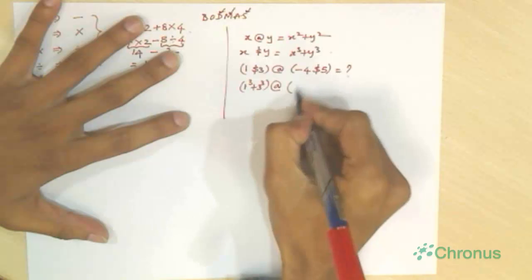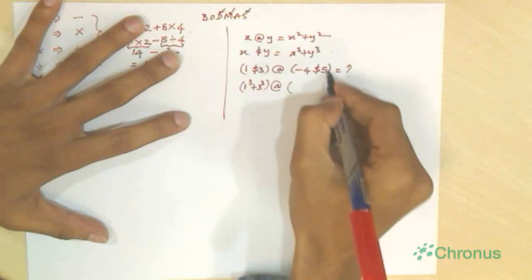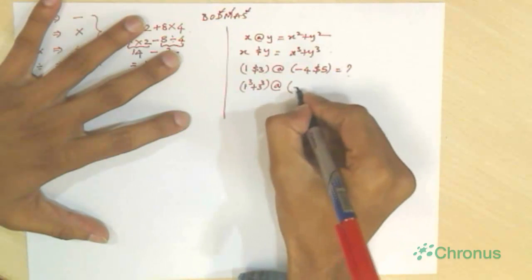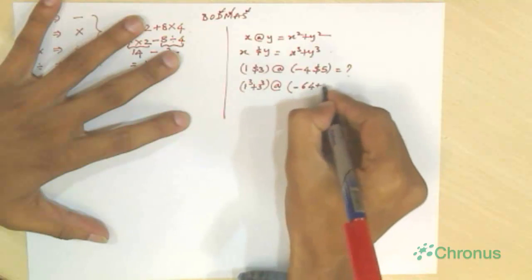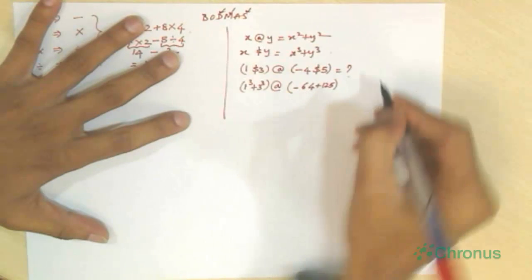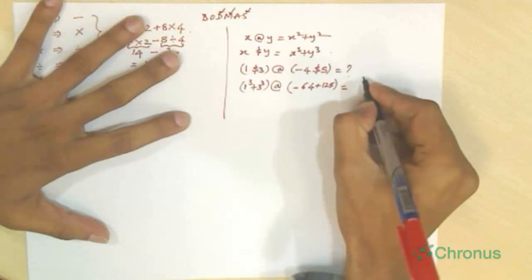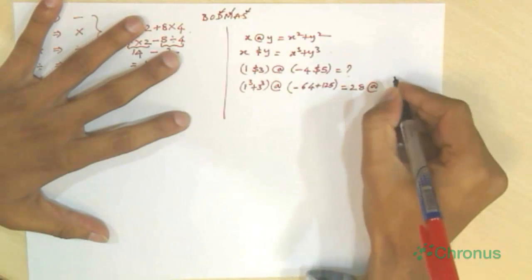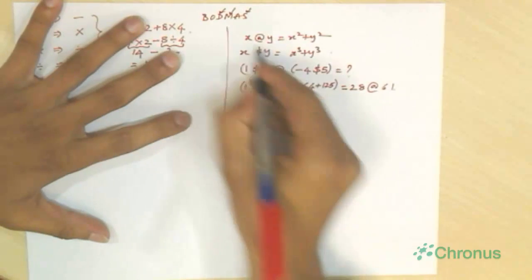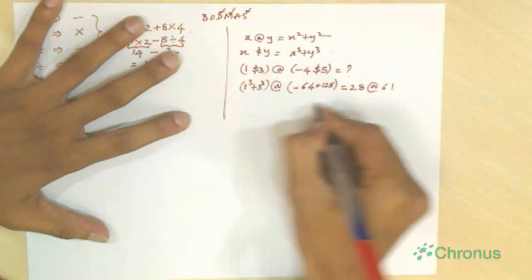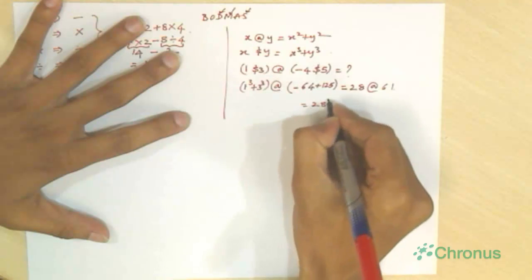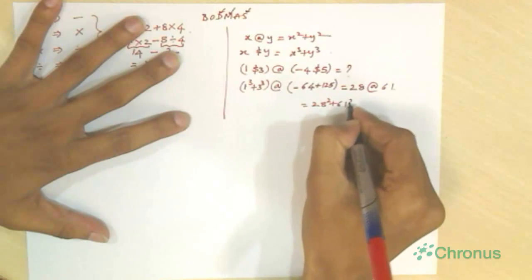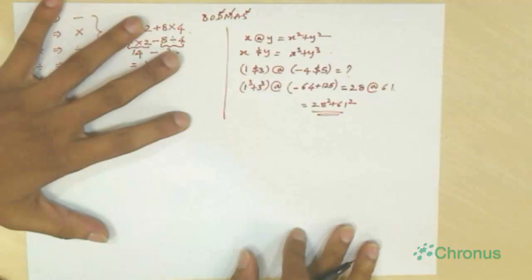So minus 4 cube plus 5 cube. Minus 4 cube is minus 64 plus 125. So that is equal to 61. And 1 plus 27 is 28. And at is nothing but x square plus y square. That is equal to 28 square plus 61 square. So we just calculate that.